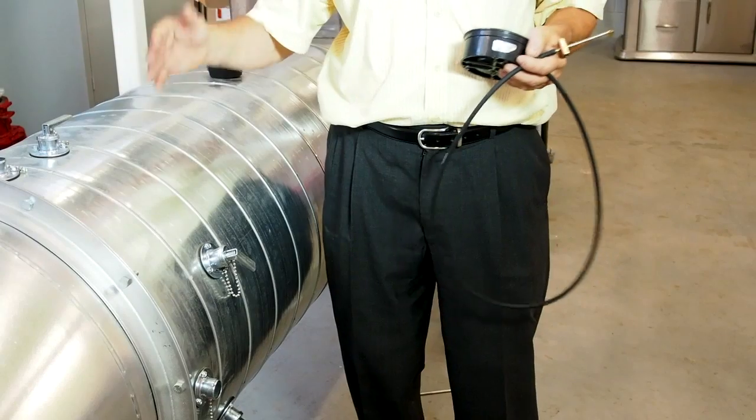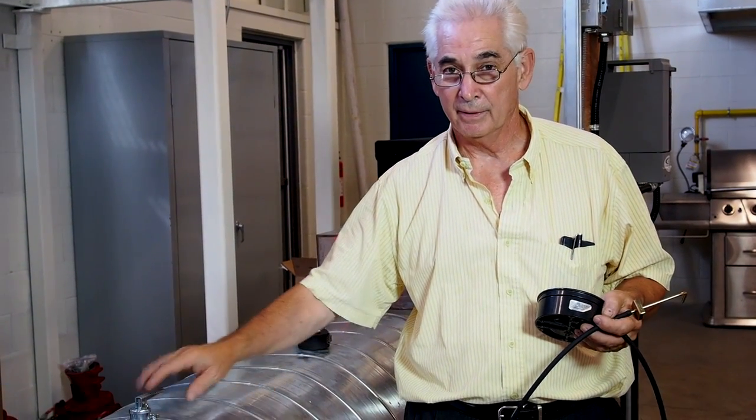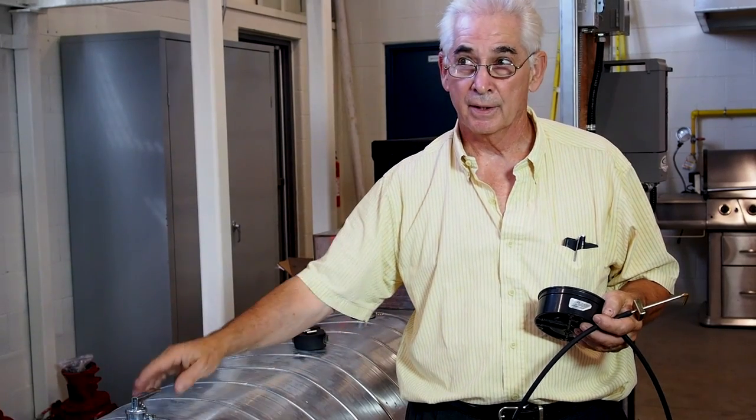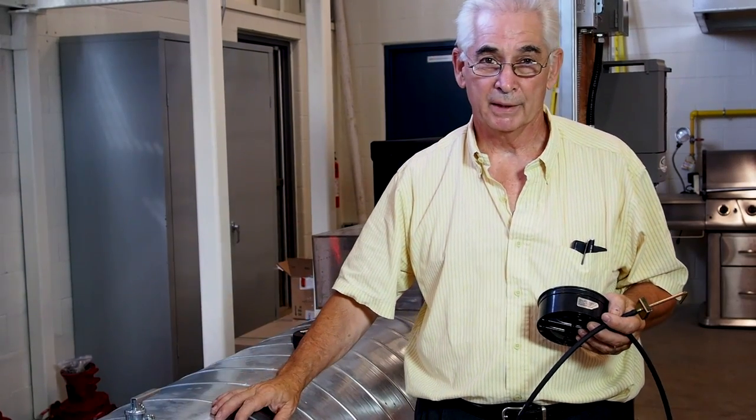Again, we're trying to determine what's the average velocity through the duct. We know the area of the duct is 3.14 square feet. If we measure the velocity here at 1,000 feet a minute, then we determine that right here, the flow rate is 3,142 cubic feet per minute.